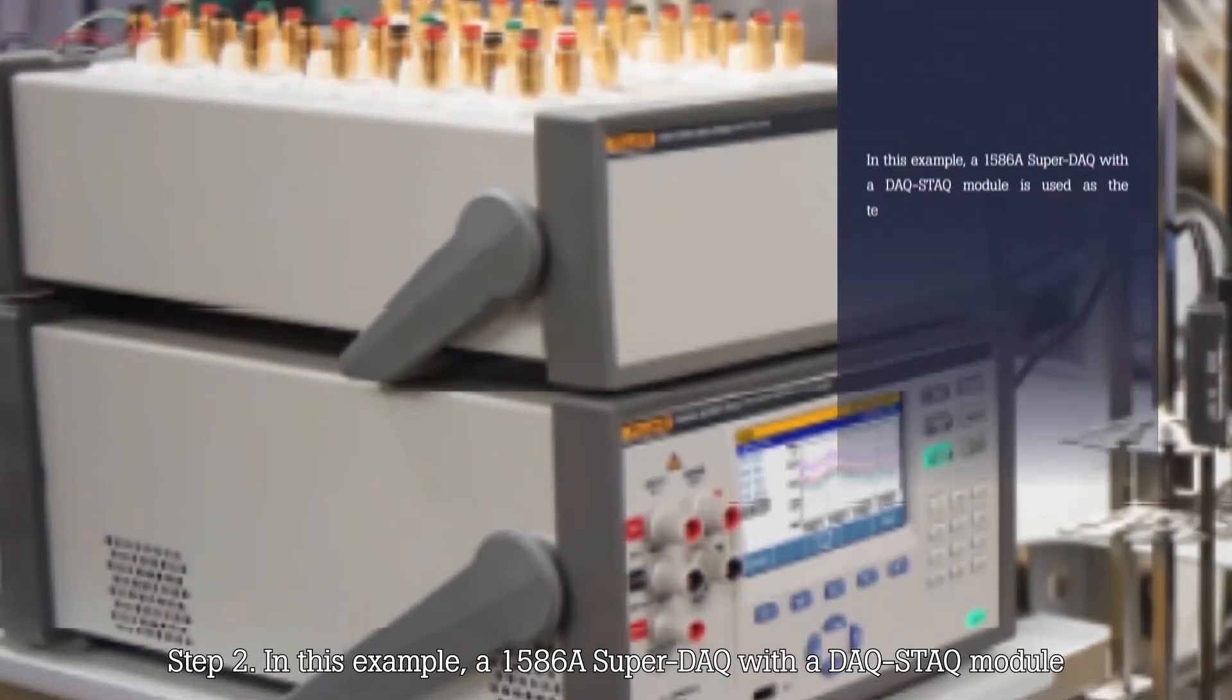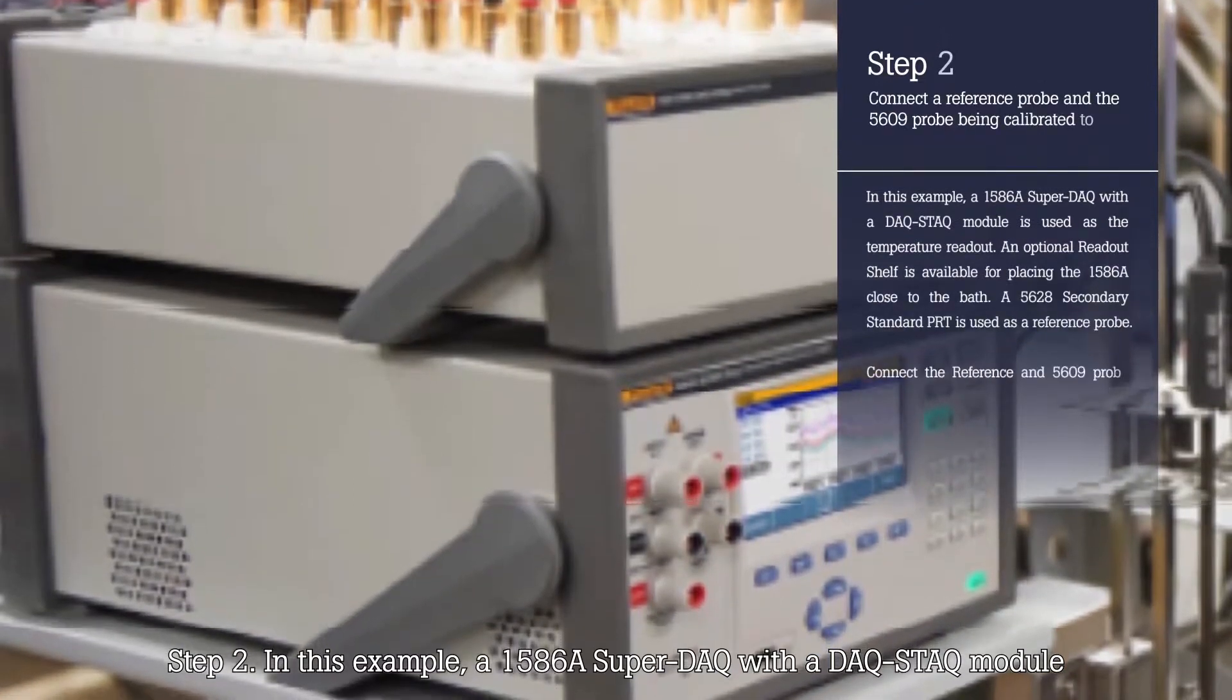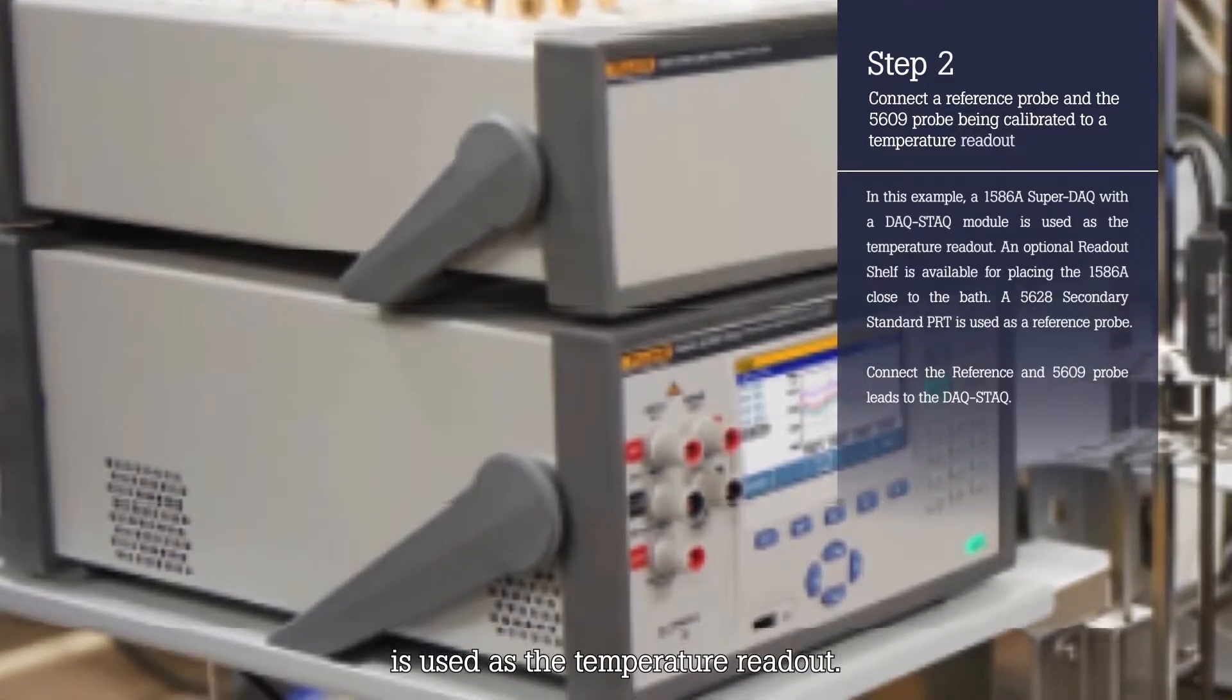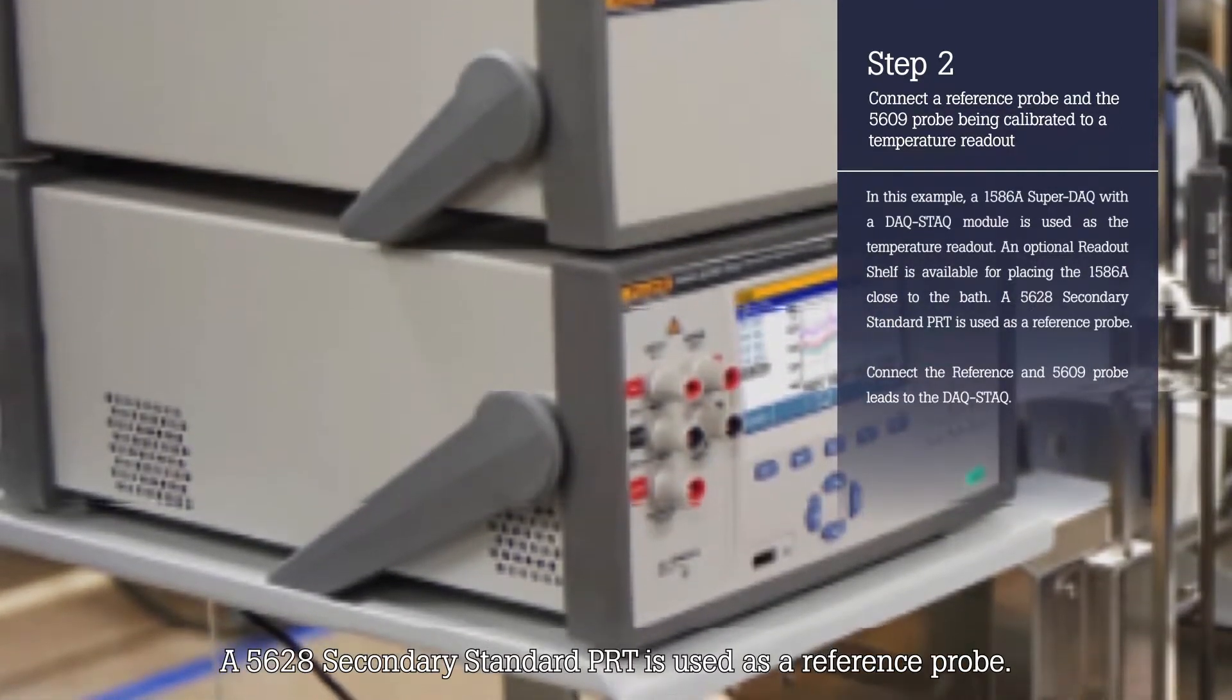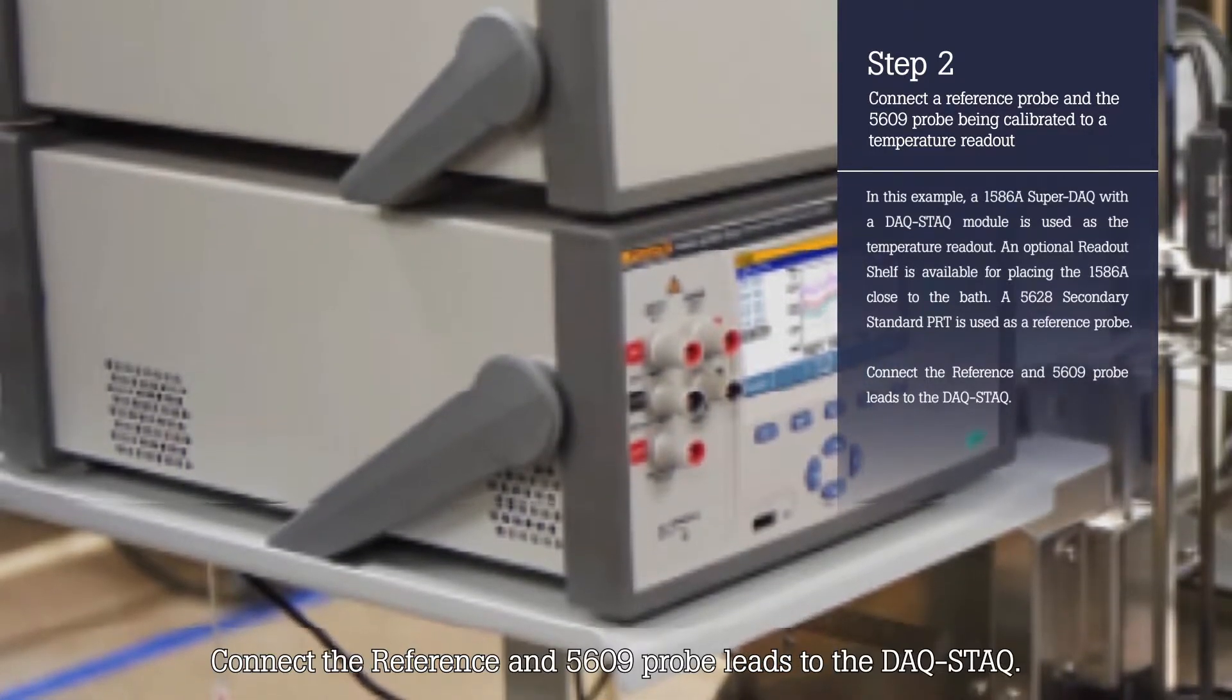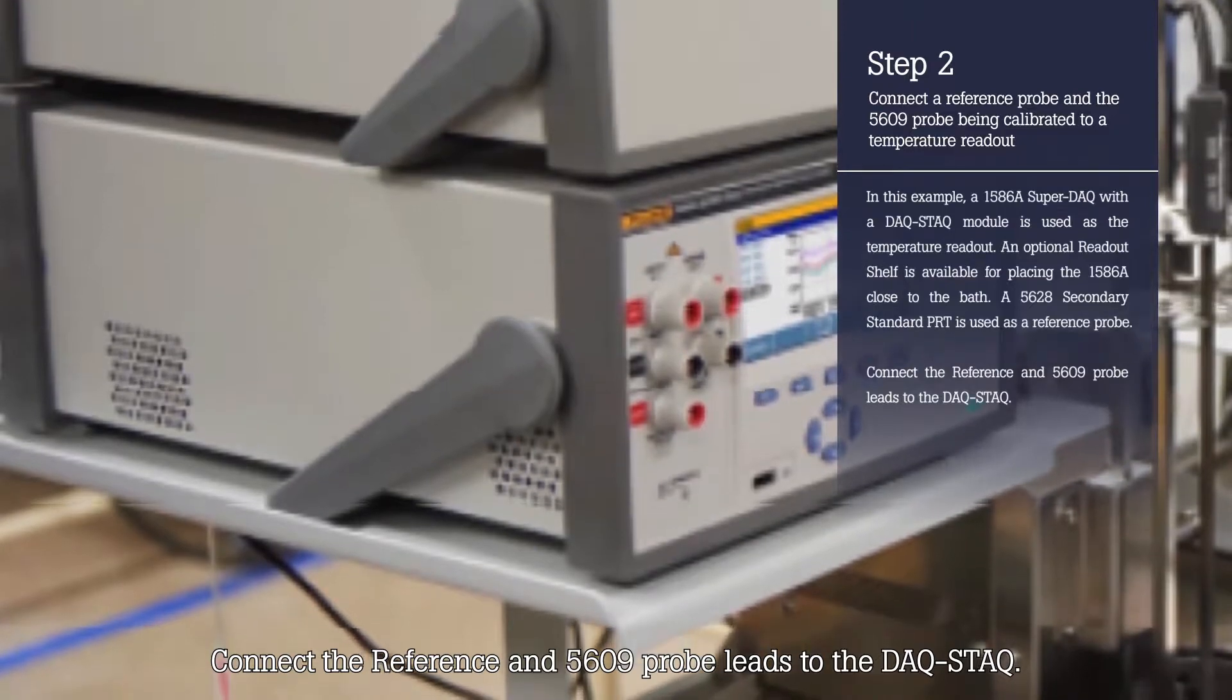Step 2. In this example, a 1586 Super DAC with a DAC stack module is used as the temperature readout. An optional readout shelf is available for placing the 1586 close to the bath. A 5628 secondary standard PRT is used as a reference probe. Connect the reference and 5609 probe leads to the DAC stack.